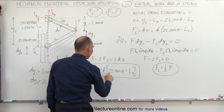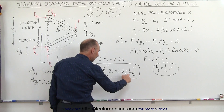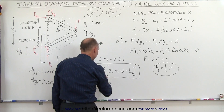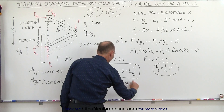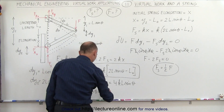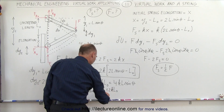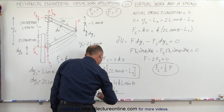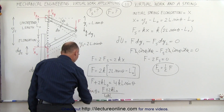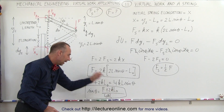We can also solve for sine of theta. Moving the term 2k times L sub-naught to the other side: F plus 2kL sub-naught equals 4kL sine theta. Solving for sine theta: sine theta equals (F plus 2kL sub-naught) divided by 4kL, where L is the beam length, k is the spring constant, and L sub-naught is the original spring length. This gives the relationship between angle, applied force, and spring parameters.